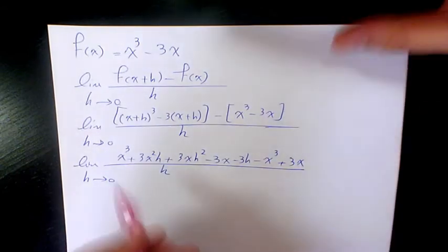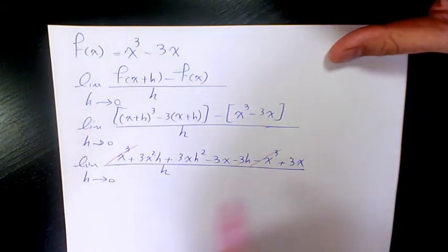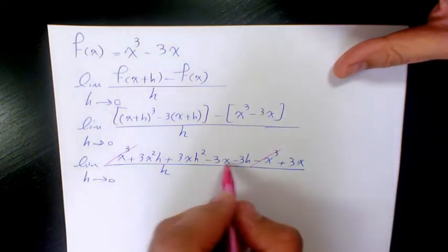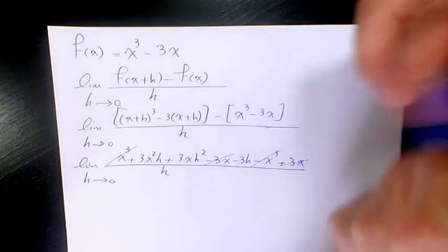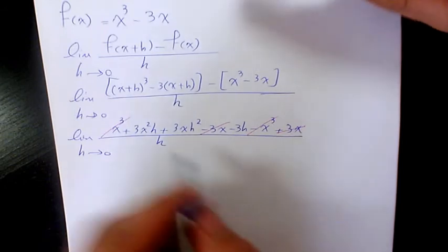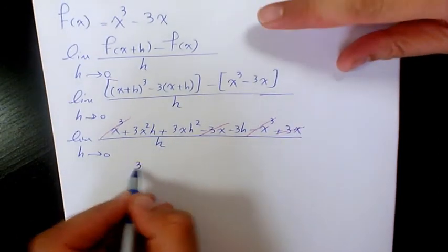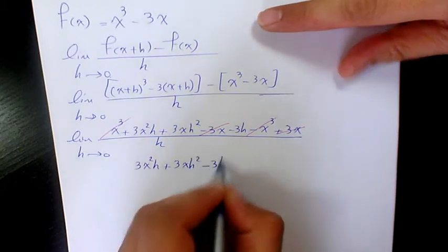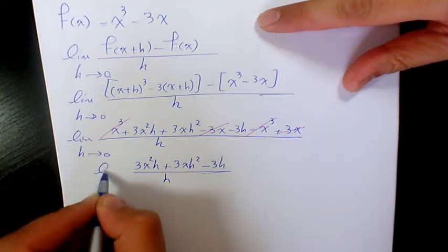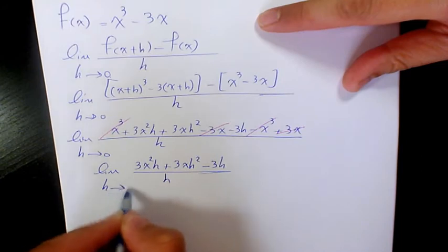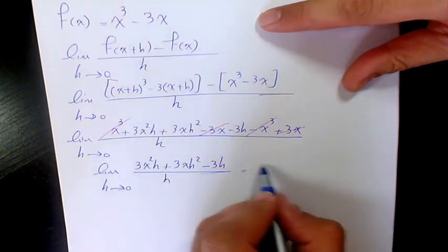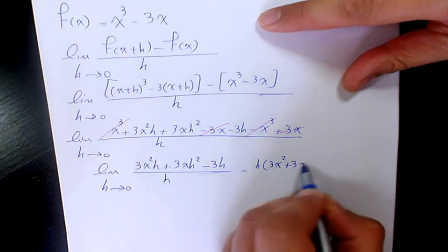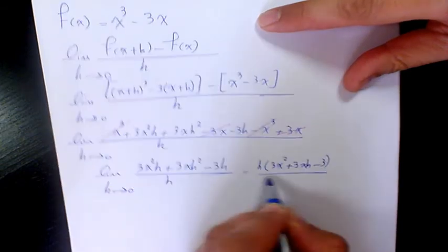When h approaches 0: x³ and negative x³ cancel out, and negative 3x and positive 3x cancel out. After factoring h from the remaining terms, we get 3x²h + 3xh² + h³ - 3h divided by h, which gives 3x² + 3xh + h² - 3, when h approaches 0.